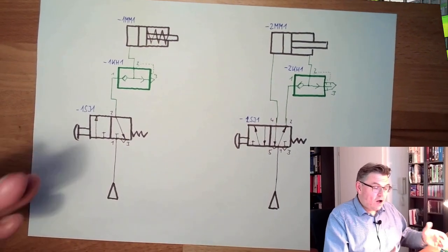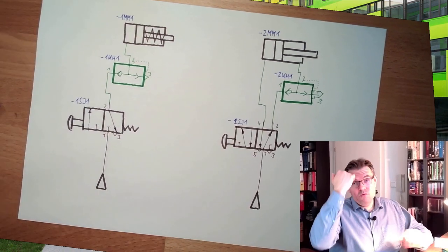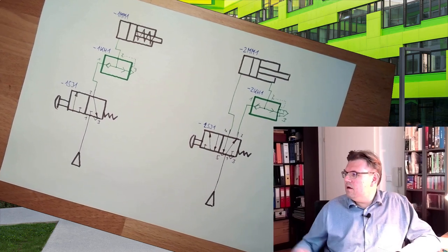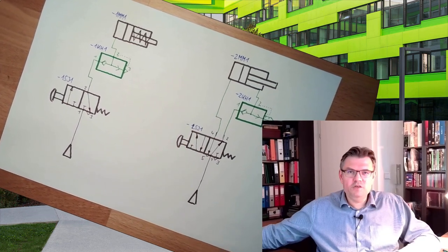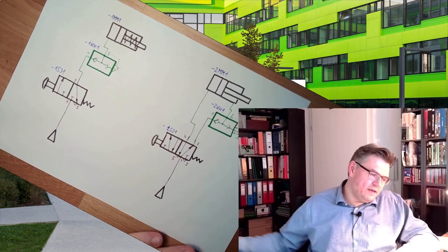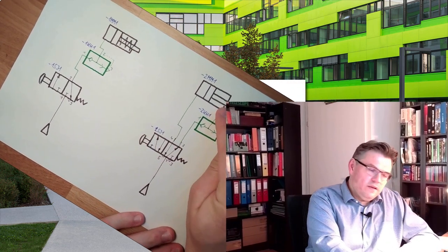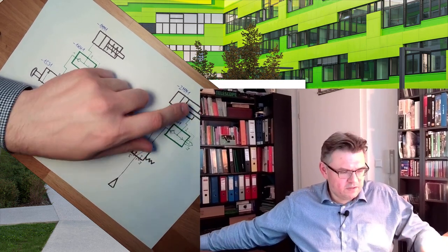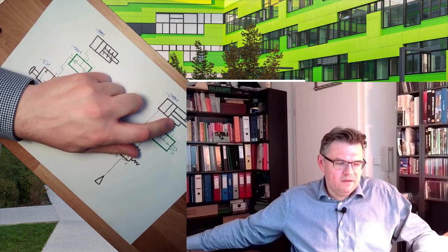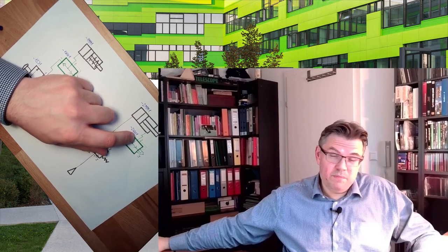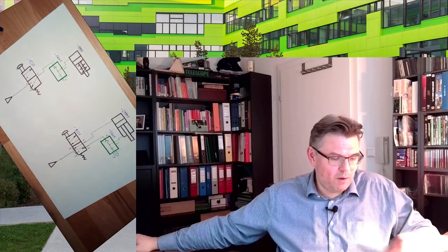This is how you may use quick exhaust valves. Simply to reach the end position, to speed up. And like I said, directly connected to the cylinder, or maybe with a short hose, this is enough. Because the longer the way between the exhaust opening of the cylinder and the quick exhaust valve will be, the more we have troubles.